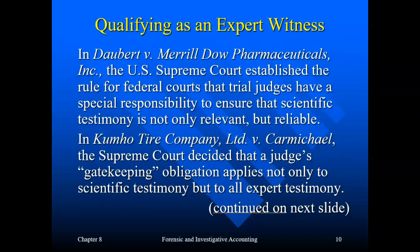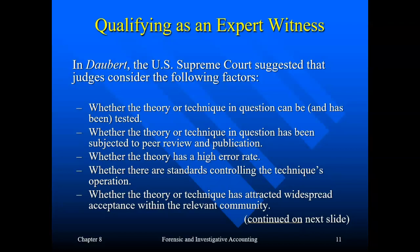The Daubert standard comes from a U.S. Supreme Court case and established rules for allowing experts. The Kumho Tire Company case added another requirement. The five Daubert requirements are: whether the testimony or technique can be and has been tested; whether the theory or technique has been subjected to peer review and publication; whether the theory has a known error rate — mainly relevant in science; whether there are standards controlling the technique's operation; and whether the theory or technique has attracted widespread acceptance within the relevant community. Federal courts and a good number of state courts use the Daubert standard, while a good number of state courts still use the Frye standard.